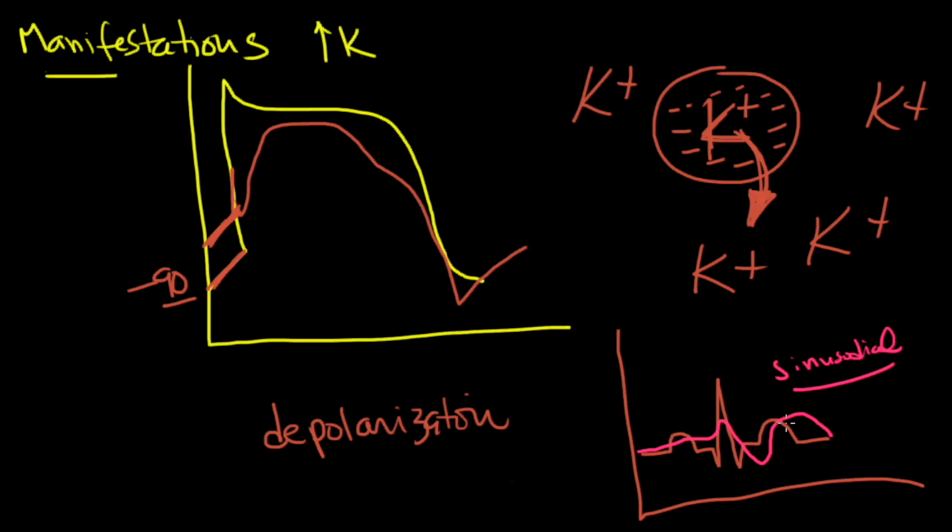And of course, the higher the potassium and the faster the potassium has gotten high, the more quickly you're going to see this. If somebody is camping out at five to six and they go up to seven, you're not going to see those changes because the body has a chance to adjust, perhaps. But if someone is living in the threes to fours and then jumps up to seven, you're more likely to see that.